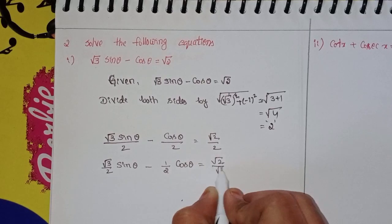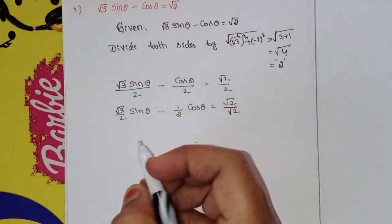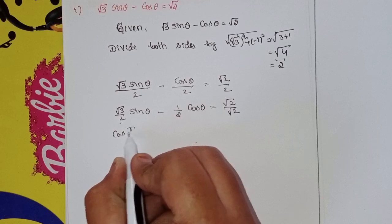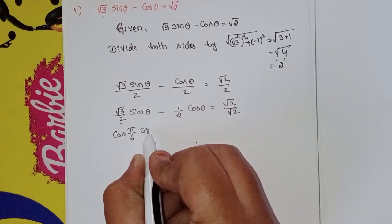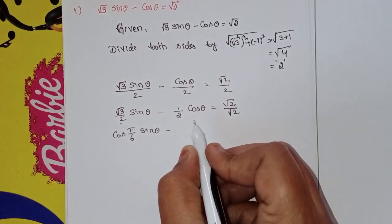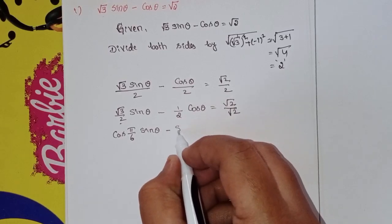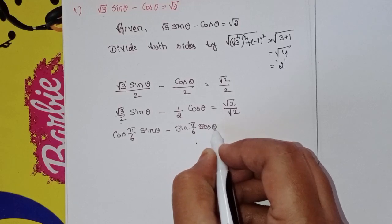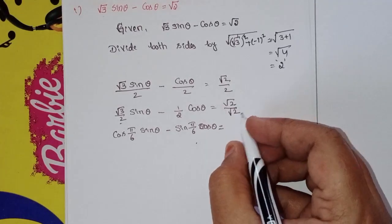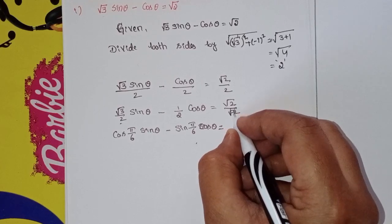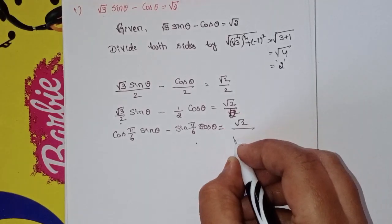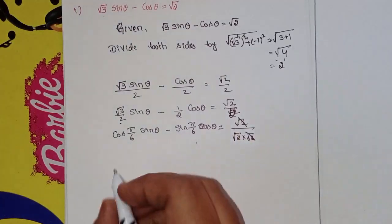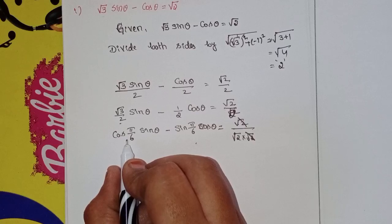So √2/√2 simplifies — root 2 and root 2 cancel — giving 1/√2 on the right-hand side.